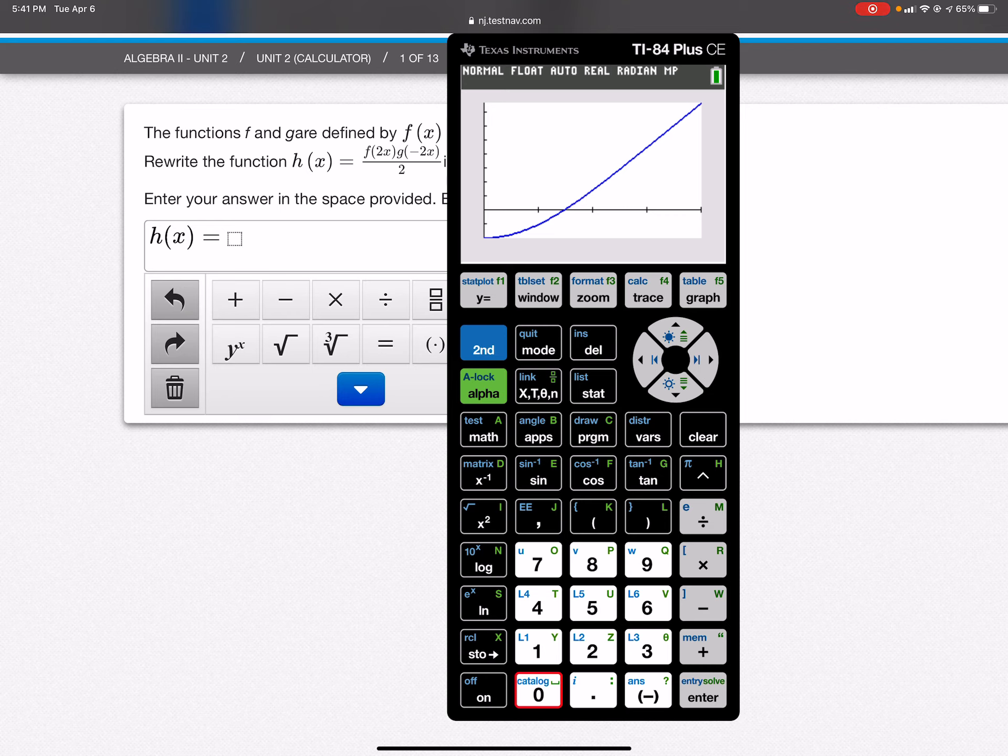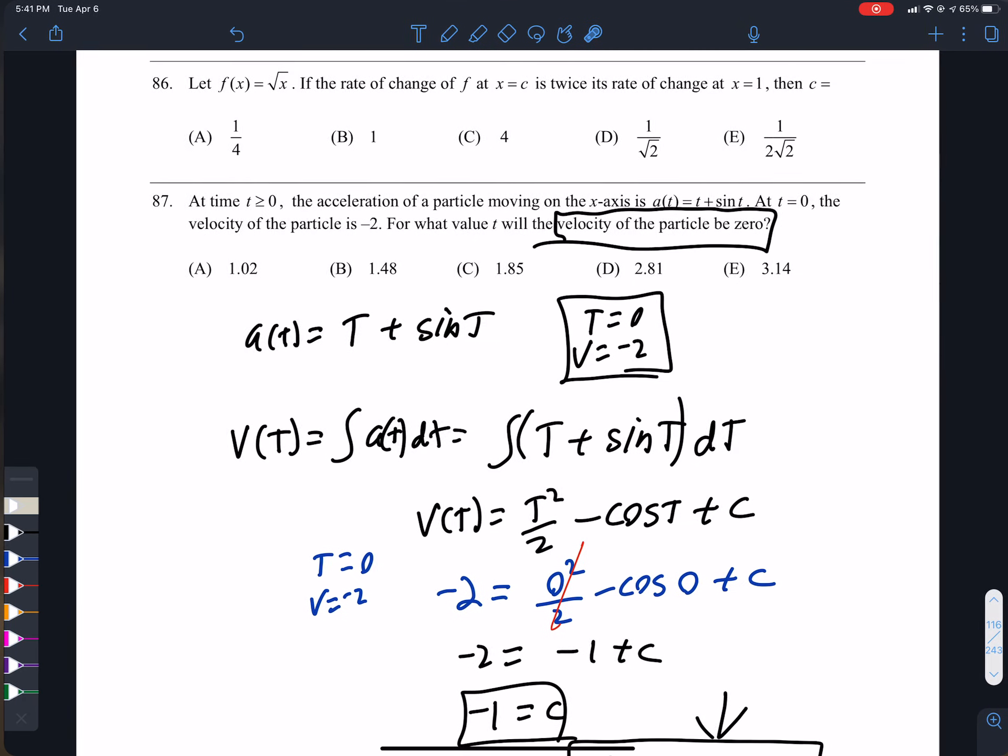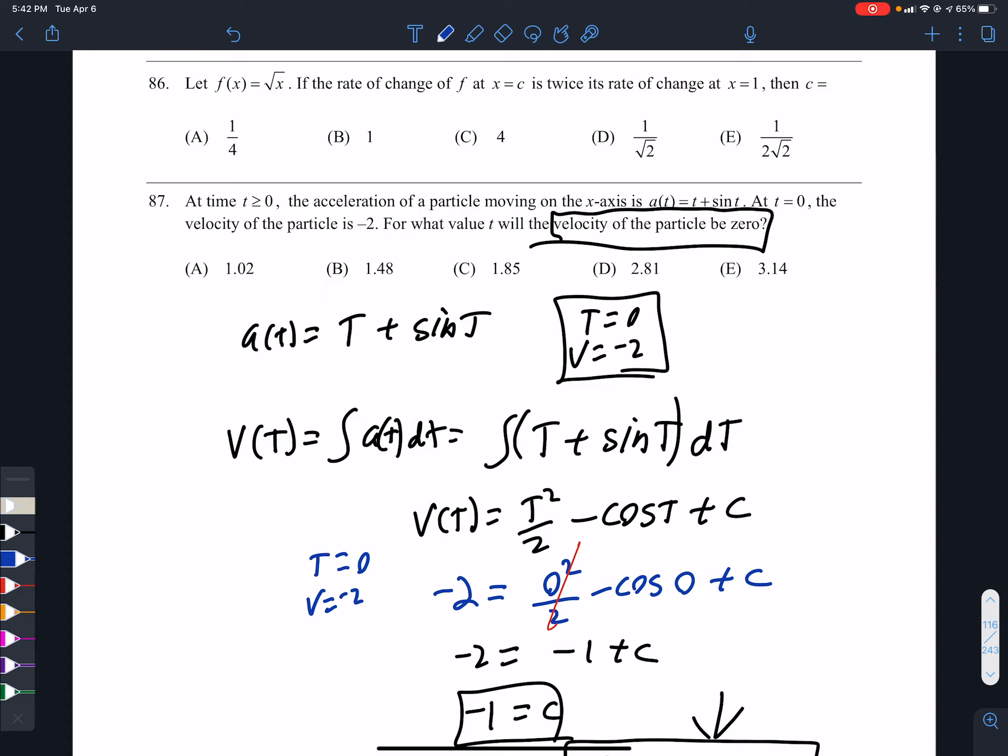Now we see when the velocity equals 0. So I'm going to calculate the 0. I move it to the left of that point. I move it to the right of that point. We have 1.478. There we go, the answer is B.